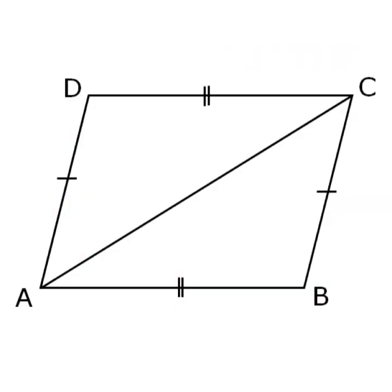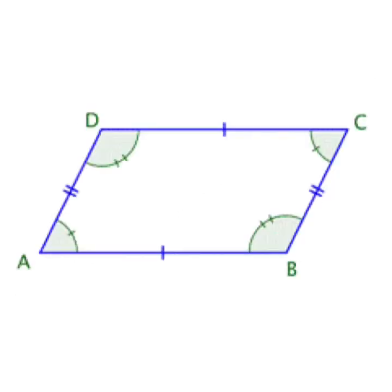A quadrilateral has 4 sides and the opposite sides are equal. You can see in this figure quadrilateral ABCD — DC equals AB and AD equals BC. The 4 sides are side AB, side BC, side CD, and side DA.